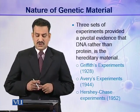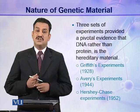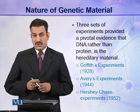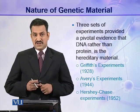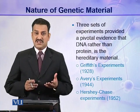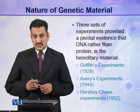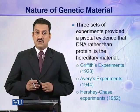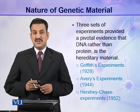Three sets of experiments provided pivotal evidence that DNA, rather than protein, is the hereditary material. These include Griffith's experiment conducted in 1928, then Avery and his colleagues' experiments conducted in 1944, which provided a base for DNA as the genetic material. Finally, the third experiment was performed by Hershey and Chase in 1952, providing the final conclusion that DNA and not protein is the genetic material.